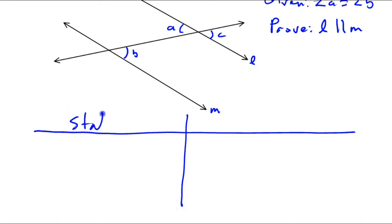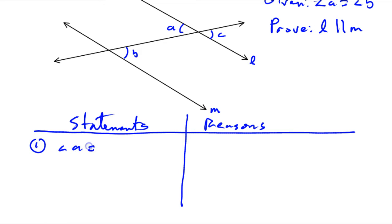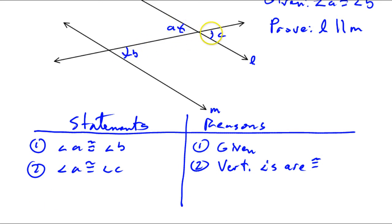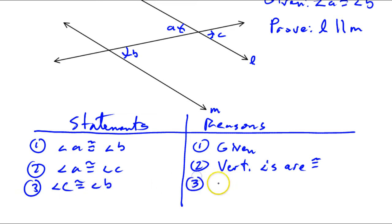Let's write out our proof. Step one: given angle A is congruent to angle B — that's given. Step two: we can say that angle A is congruent to angle C, because they're vertical angles — vertical angles are congruent. So now I've got A congruent to B and A congruent to C, so by substitution, angle C is congruent to angle B. That's substitution.